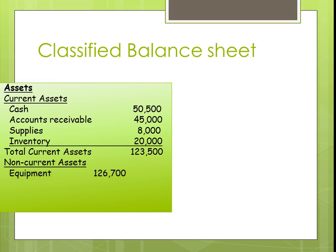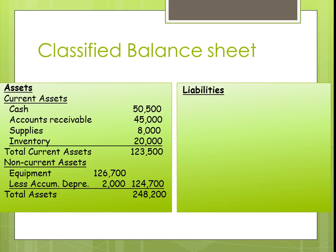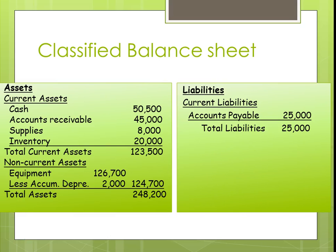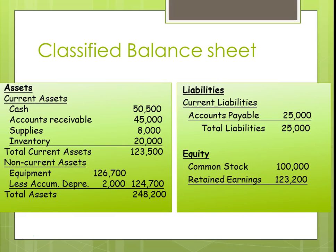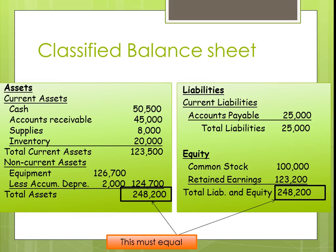We now have our total current assets. Then we do our non-current assets, which include property, plant, and equipment, less any accumulated depreciation, giving us net equipment. Our total assets are $248,200, which means liabilities and equity must equal that number. For liabilities, we show current liabilities — accounts payable — as our total liabilities. Then we show equity: common stock and our ending retained earnings adjusted for net income and dividends. Our total liabilities and equity equal our total assets, and these must always equal.